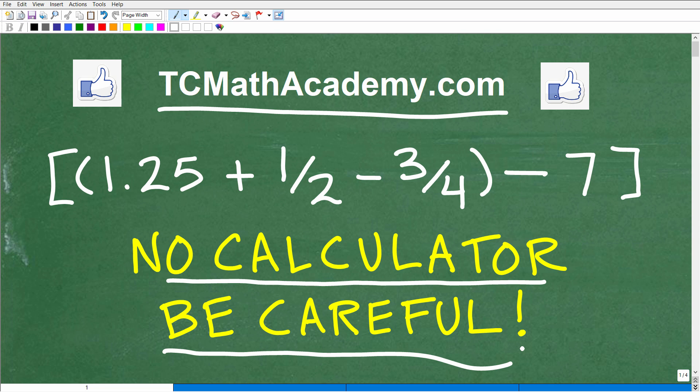So here is the problem. We have brackets, parentheses, 1.25 plus 1 half minus 3 fourths in parentheses minus 7. What does this equal to? Well, if you can figure this out, go ahead and put your answer into the comments section.